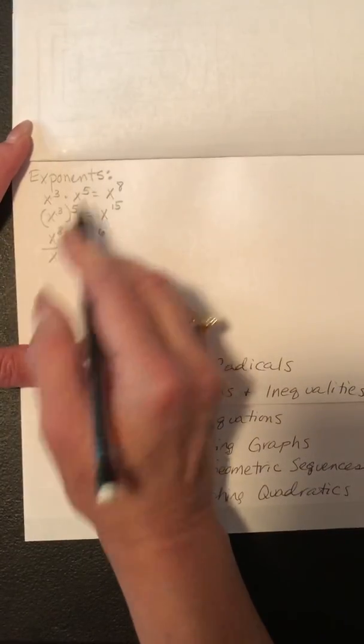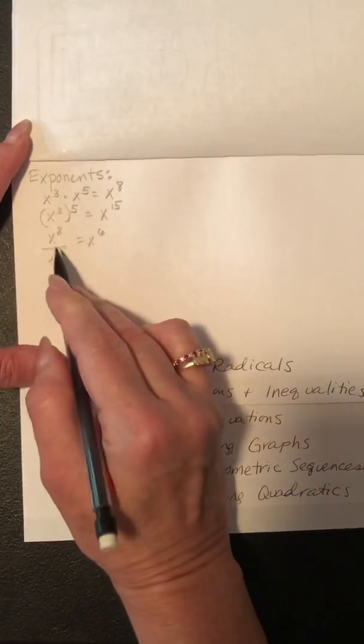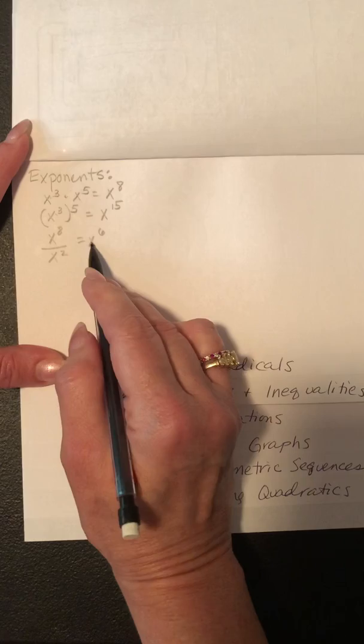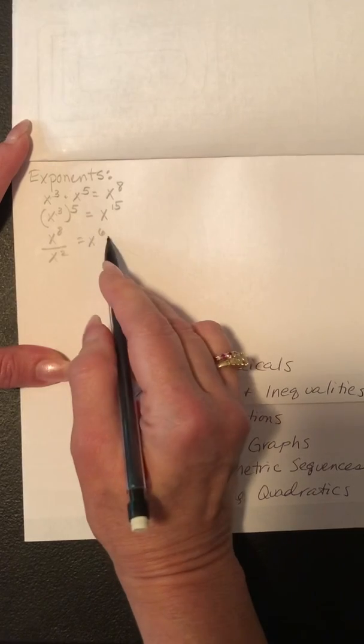So to recap: when multiplying, you keep the base the same and add the exponents. When dividing, you keep the base the same and you subtract the exponents.